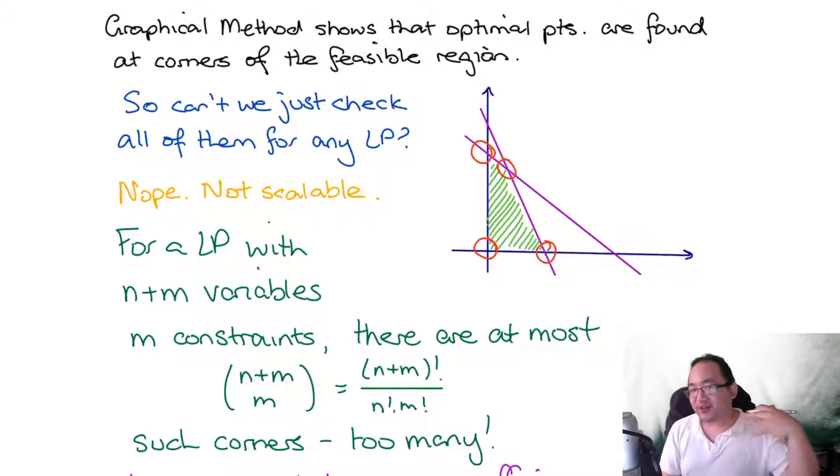So you might think, okay, well for larger problems, can we just find all the corners? Can we just test all the corners to see if it's possible to find the optimal solution? Technically, yes, in a theoretical sense.